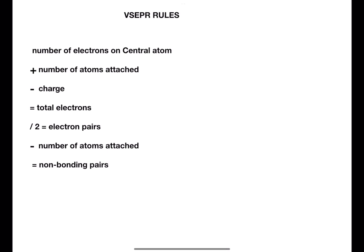Here are the VSEPR rules. First, take the number of electrons on the central atom, add on the number of atoms which are attached to it, and minus any charge. Take this number and divide it by two, and that will give you the number of electron pairs.